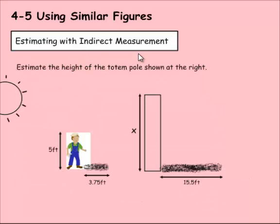So here we can estimate with indirect measurement as well using these ratios. This totem pole here at the right is way too tall to measure without getting a ladder of some sort. But we can actually use indirect measurement to solve it because both these objects are casting a shadow. And I know how tall this person is. This person's five feet tall.